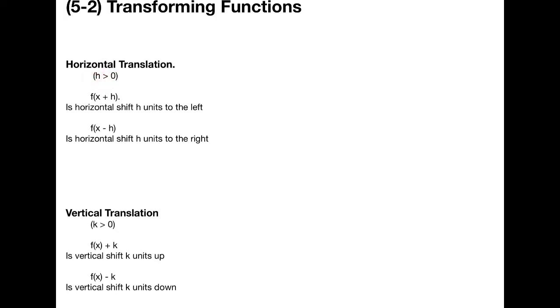Let's suppose h is a positive number, greater than zero, and you have a function f(x). If f(x) is changed to f(x+h) — if you add this positive number h to x — then the graph of your function is shifted h units to the left. Similarly, if you change x to x-h, where h is still a positive number, then the graph of f is shifted h units to the right.